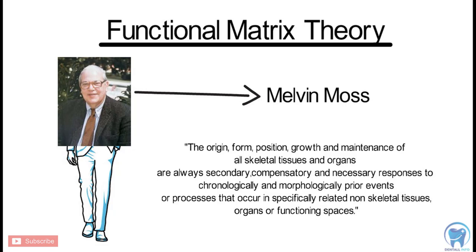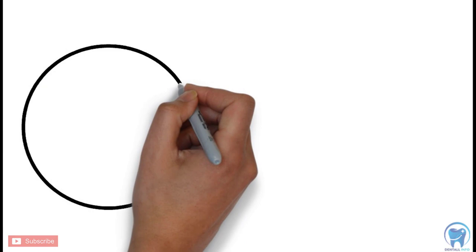According to the Functional Matrix Theory, the form, function, position, growth and maintenance of the skeletal tissues are affected by the non-skeletal tissues.